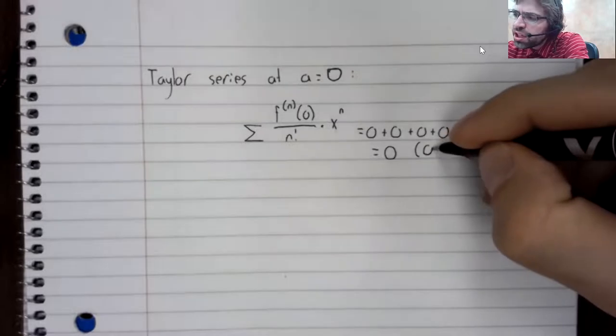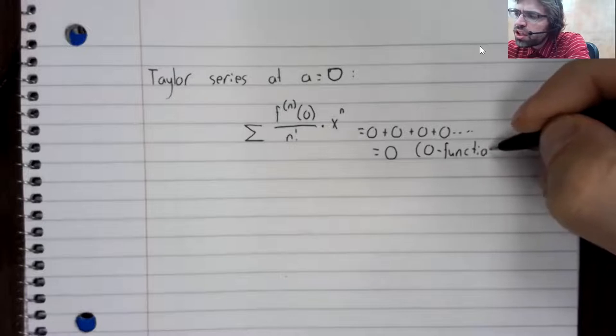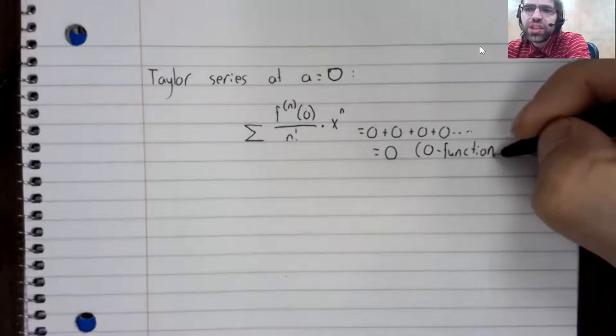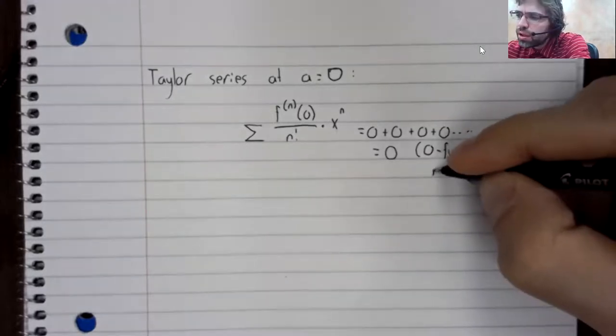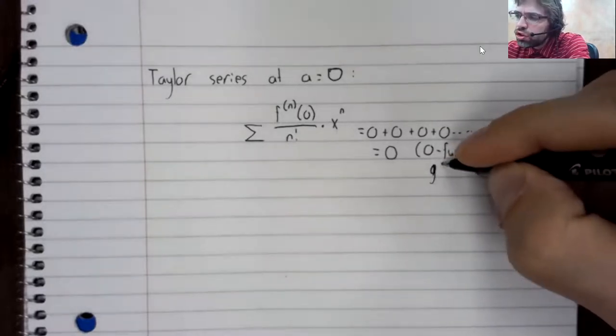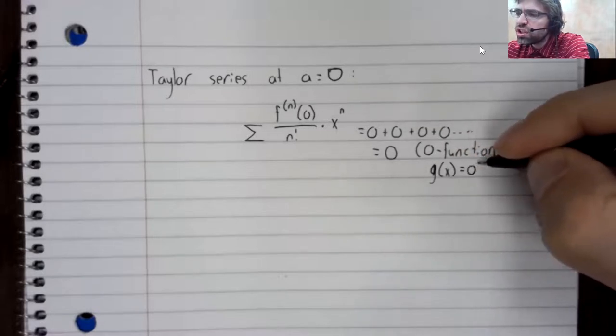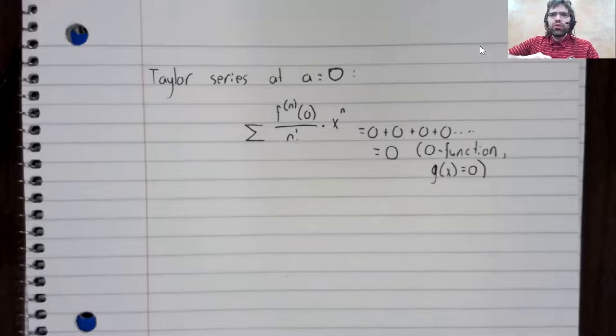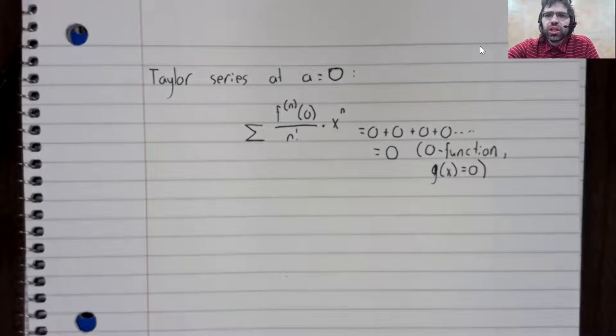This could be a little confusing. When I say that it equals zero, I mean that it equals a zero function. G of x equals 0. So the Taylor series at zero, the Maclaurin series, is a constant function. The function is zero.